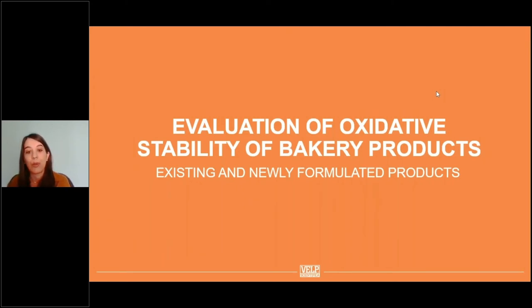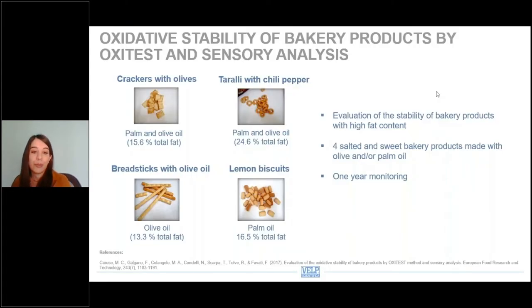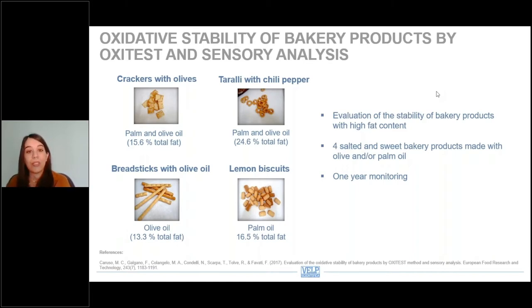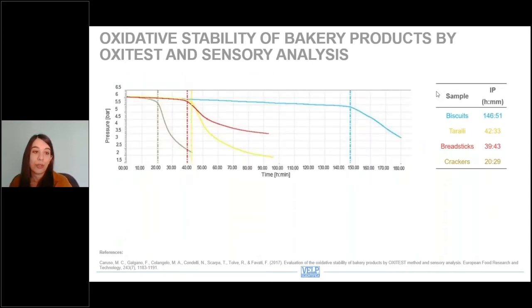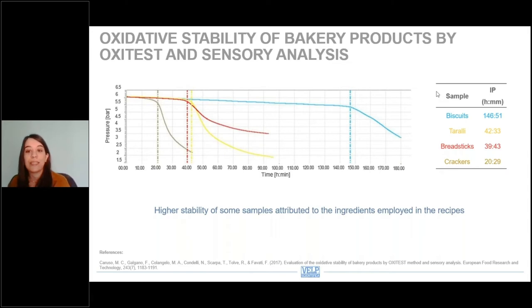Let's start with some examples on bakery products. A local producer provided us four different types of wheat and salty bakery products, and our aim was to evaluate the oxidative stability both by Oxytest and sensory analysis, alongside with classical chemical analysis. The products were monitored for one year. As first results, I'm going to show you that the oxidative stability can be very different between different products. Biscuits were much more stable compared to other products such as crackers.